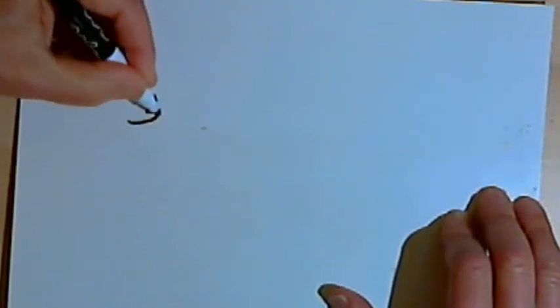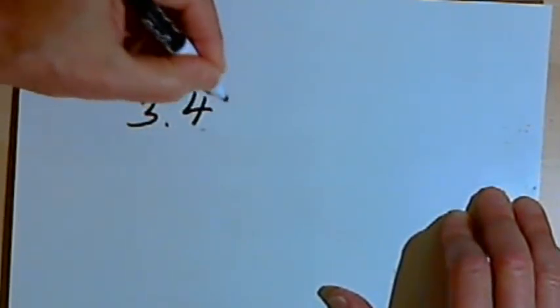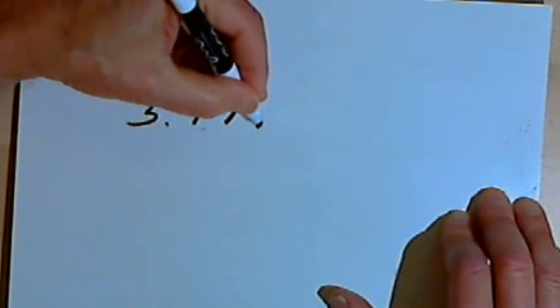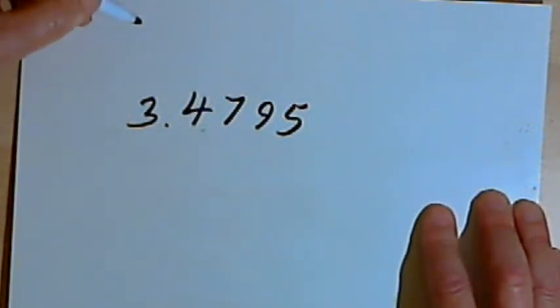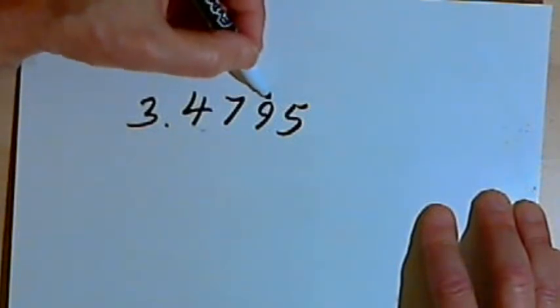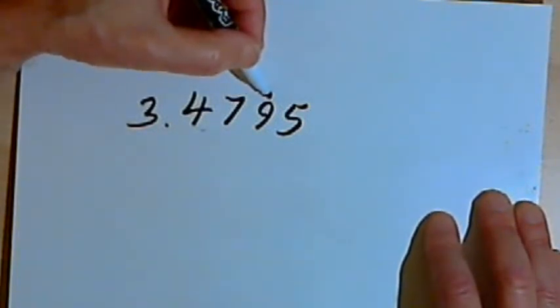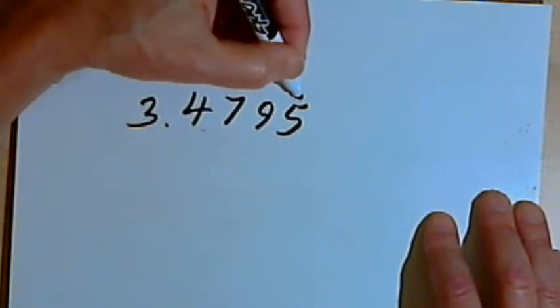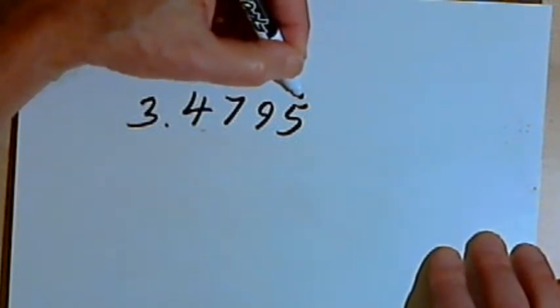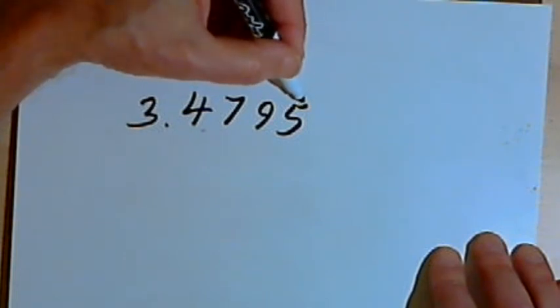Okay, let's do one more. Let's take 3.4795 and round that to three decimal places. So I've got a 9 in the third decimal place. I'll go one decimal place over to where the 5 is. Since that 5 is 5 or greater, I'm going to round my number up.